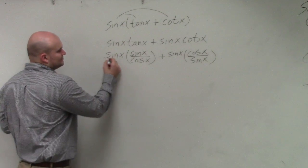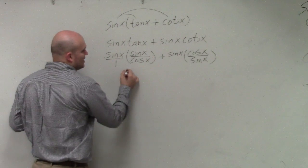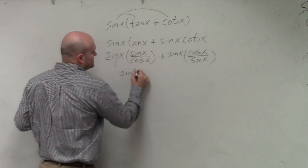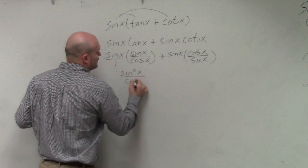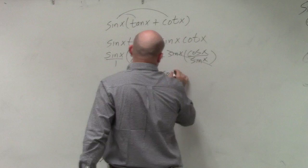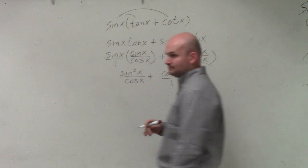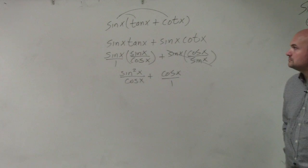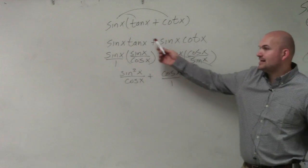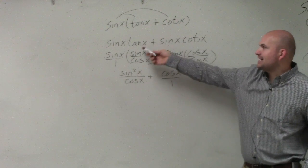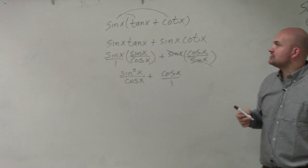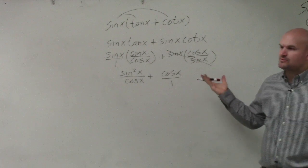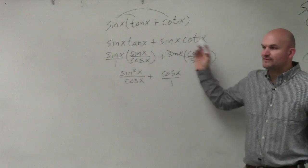Now, when I multiply across, I have sine squared of x over cosine of x plus cosine of x over 1. Well, I can't add these two. They're not like terms. You can't add sine of x, tangent of x, plus sine of x. That's like adding x plus y. You can't combine them. These are totally different.